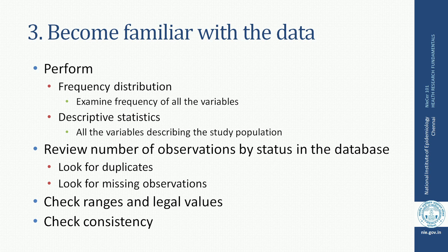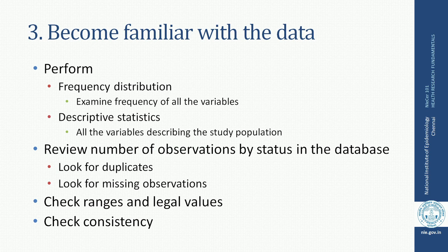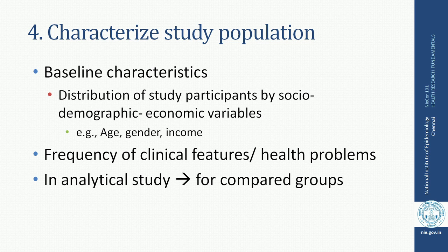Then look at descriptive statistics which helps you describe the study population — this gives a fairly good idea of what the dataset is about. Secondly, review the observations by their status in the database: are there duplicates? Look for missing observations. Check the ranges and legal values against the data dictionary. Check for consistency in the pattern of the data. This is the crucial third step which you need to spend sufficient time on.